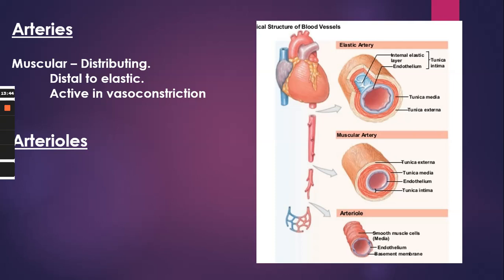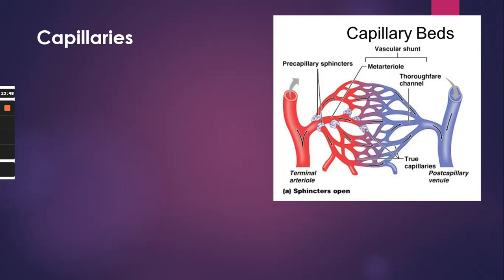That leads us into the capillary beds. The capillaries are the smallest blood vessels in our body — the walls of the capillaries are usually one cell layer thick. Some are so small that only one single red blood cell fits through at a time. Most of our capillaries have numerous pores in them, which allows substances to go through. The capillary beds allow for fluid and white blood cells to pass from the bloodstream into the tissues, and this is also where gas exchange occurs.